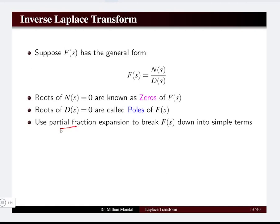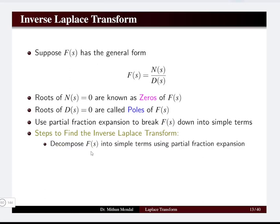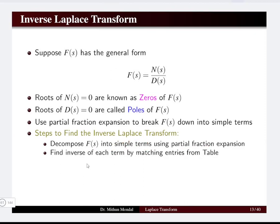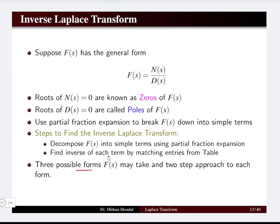We can use partial fraction expansion to break the function F(s) into simple terms. The steps to find the inverse Laplace transform are: first, decompose F(s) into simple terms using partial fraction expansion. Second, find the inverse of each term separately by matching entries from the table discussed in Lecture 13a. There are basically three possible forms that F(s) may take, and a two-step approach has to be followed for each possible form.